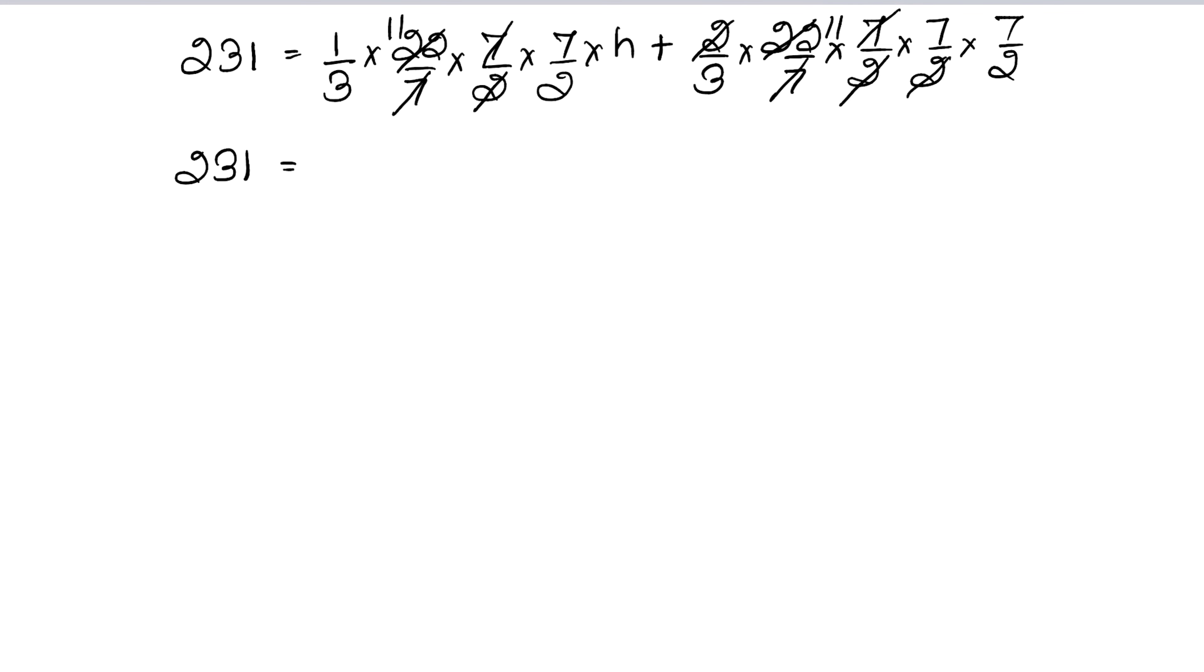7 cancel here, 7 cancel, 2 cancel. So this is 231 equals to, if you can see, 11 7s are 77 upon 6, or h, 6h, plus 11 into 49, so here 539.